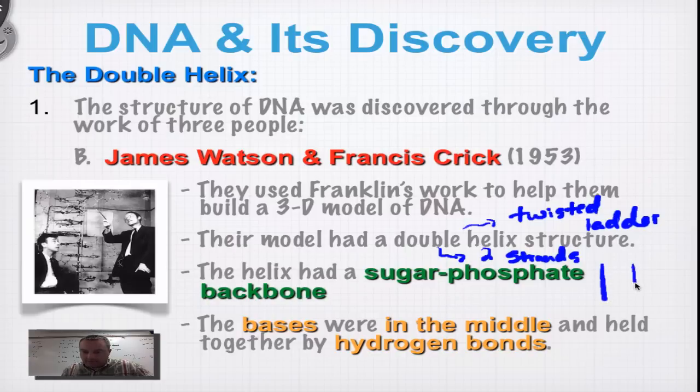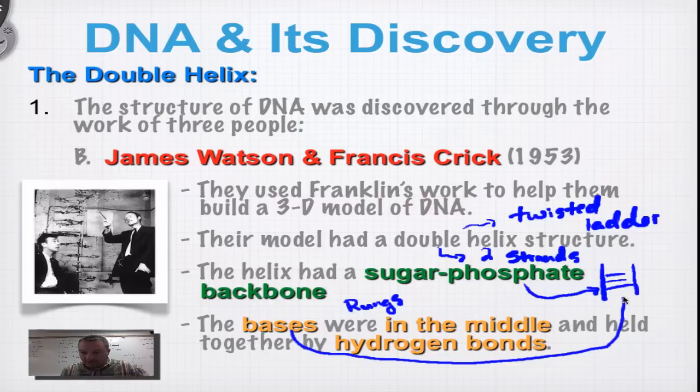The helix has a sugar and phosphate backbone. Basically, if you draw a ladder like this, the sugar and phosphate backbone is right there. And the bases are in the middle. And the steps of a ladder are called rungs. So the rungs of the ladder are the nitrogenous bases. I'm going to draw right down in here. So the bases would be here in the middle. And these bases are held together by hydrogen bonds.